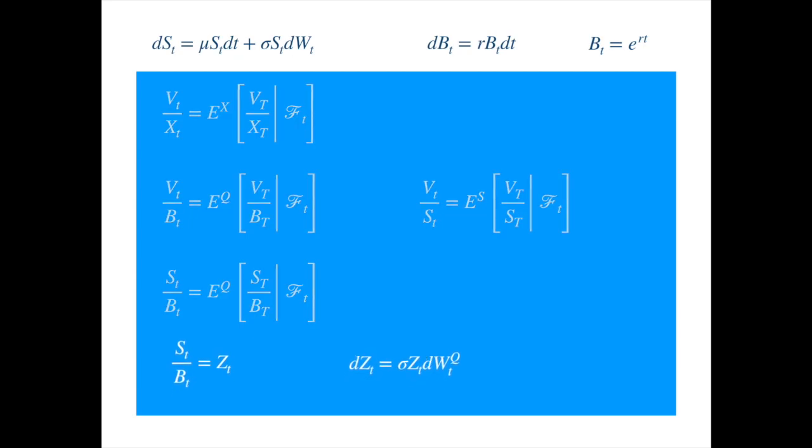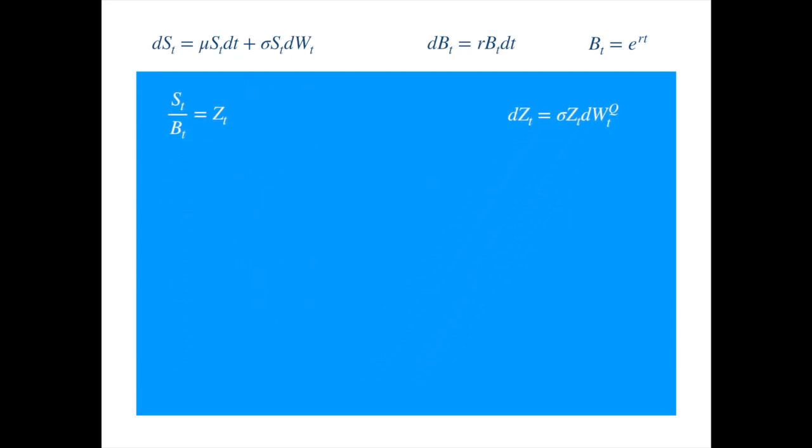Now, let's apply Ito's rule to the product of S and 1 over B. So we get... Now, let's calculate the differential of 1 over B. And we substitute 1 over B for the exponential of minus R times T. We can substitute back into the expression to get...